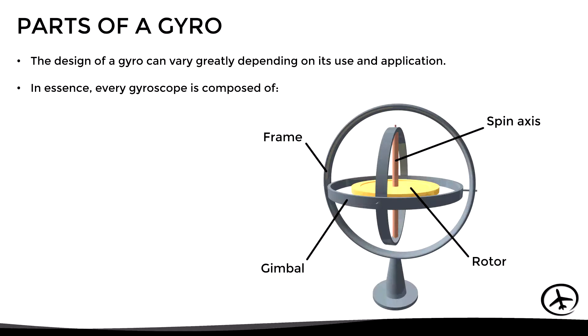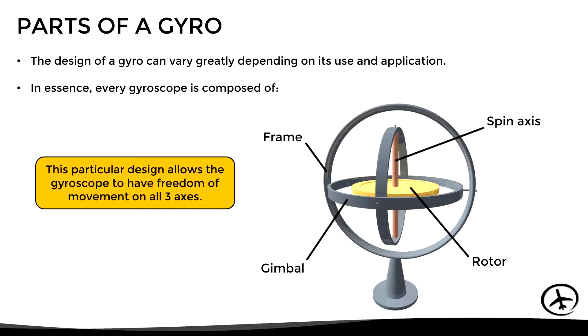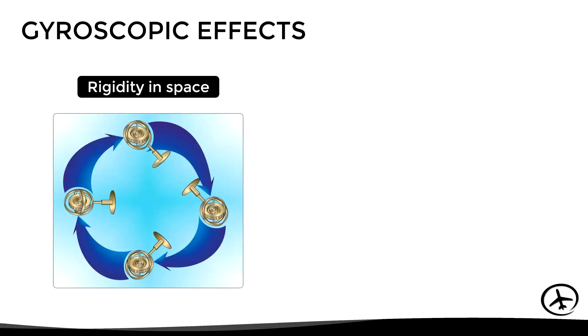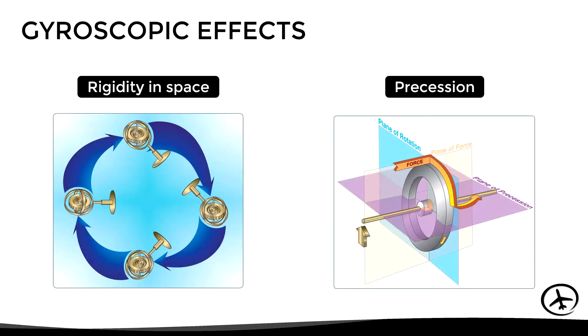This particular design allows the gyro to have freedom of movement on all three axes, and therefore it is known as a free gyro. When the rotor is not moving, nothing happens and the gyro behaves like an ordinary object. However, when it starts spinning, it begins to experience the gyroscopic effects. These effects are rigidity in space and precession. Let's take a closer look at each of these, starting with rigidity in space.